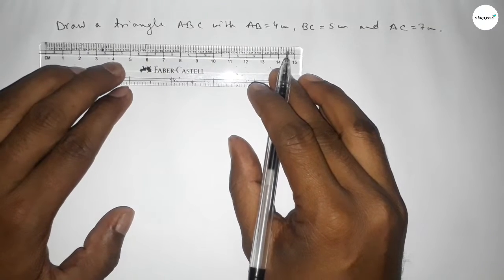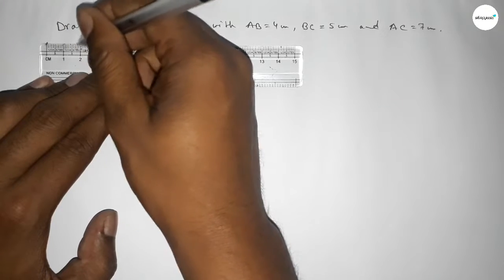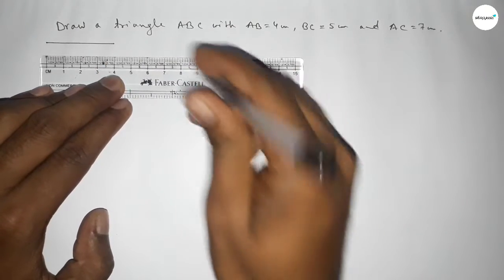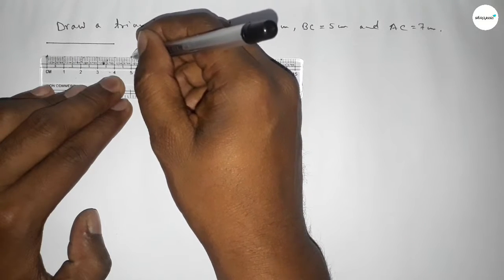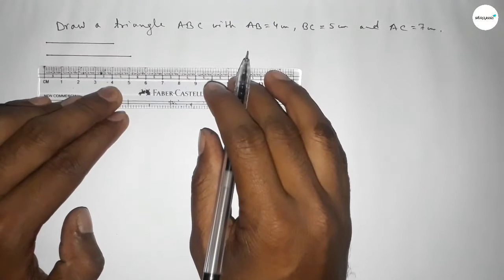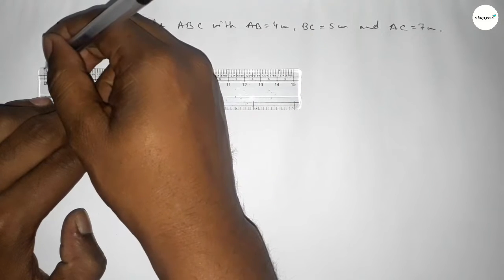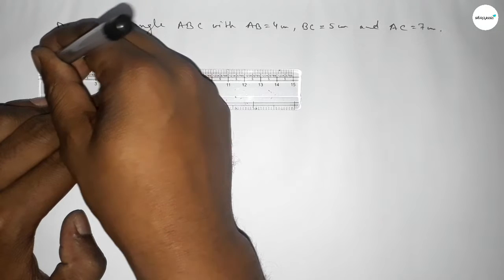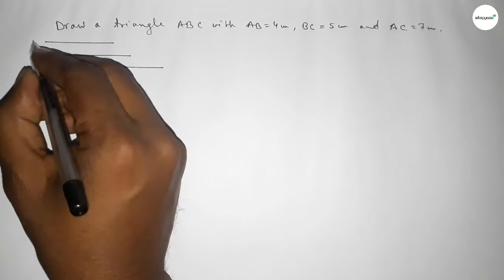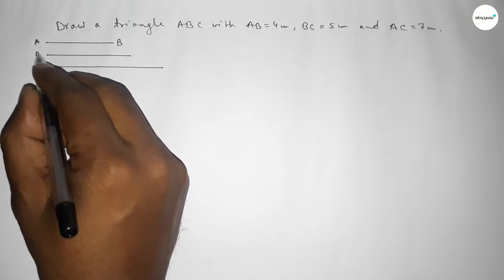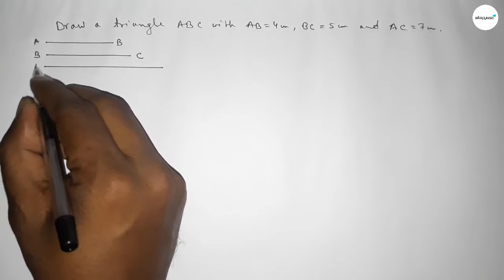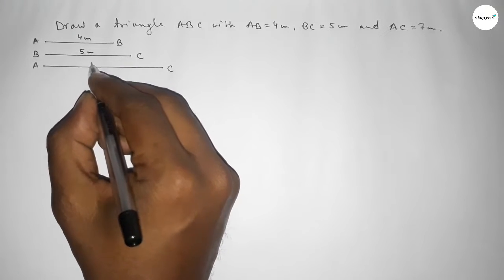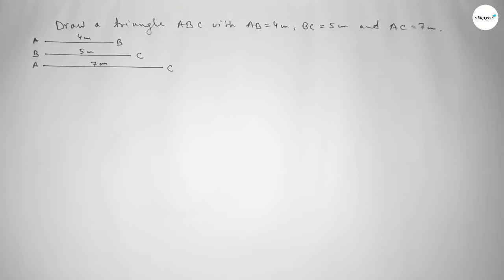First of all, we draw a line of length 4 centimeter — this is the AB line. Then drawing another line of length 5 centimeter — this is the BC line. And last, drawing a line of length 7 centimeter — this is the AC line. So AB is 4 centimeter, BC is 5 centimeter, and AC is 7 centimeter.